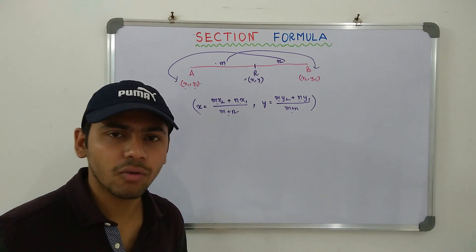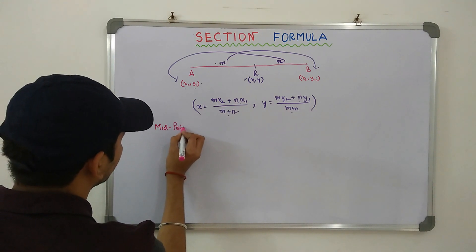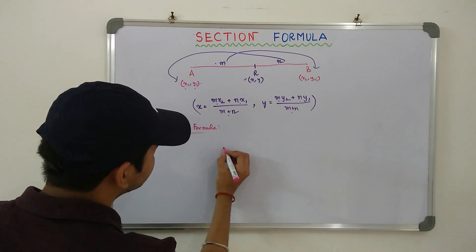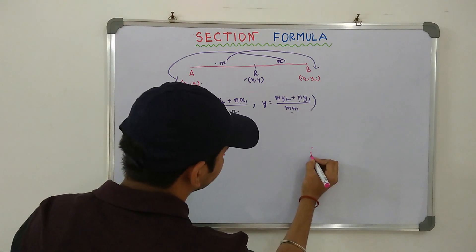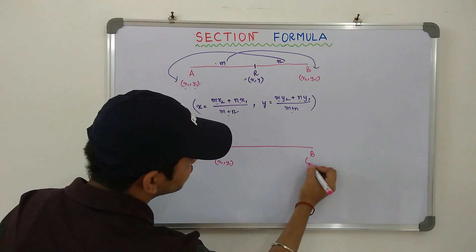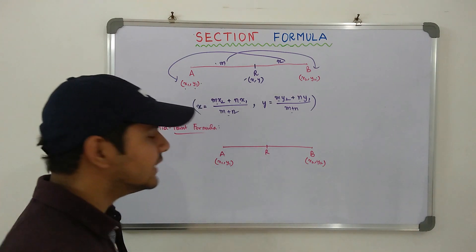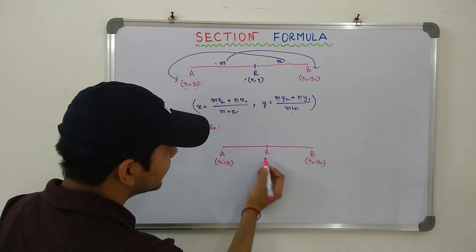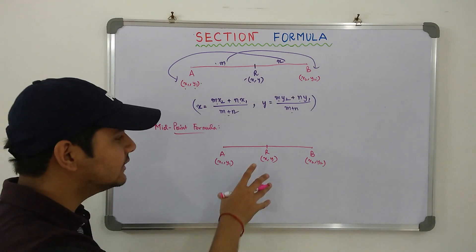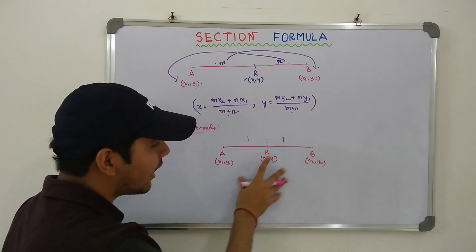Midpoint Formula. What is Midpoint Formula? Let me take two points A and B, and join both the points. Let the coordinates of A be x1, y1 and the coordinates of B be x2, y2. Now, I take a particular point R which is in between A and B such that the length of AR is equal to the length of RB — meaning R is the midpoint.